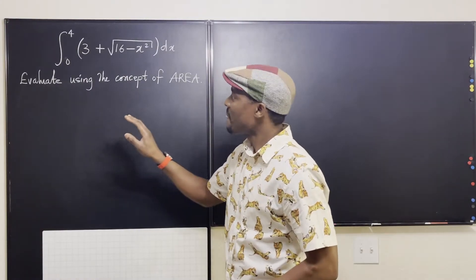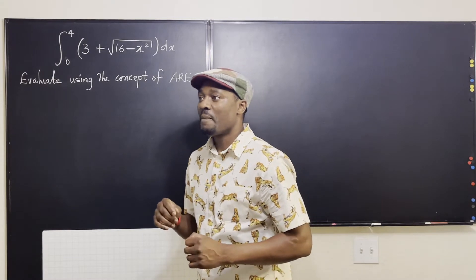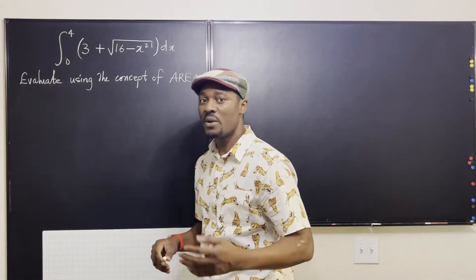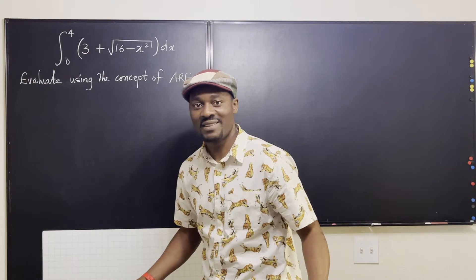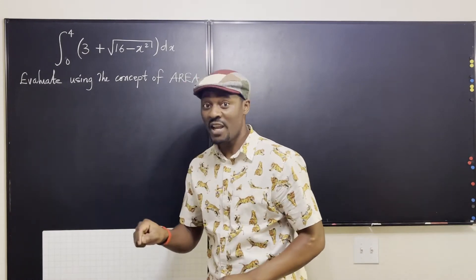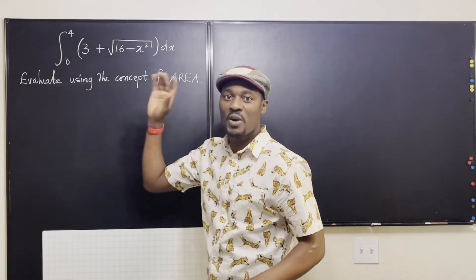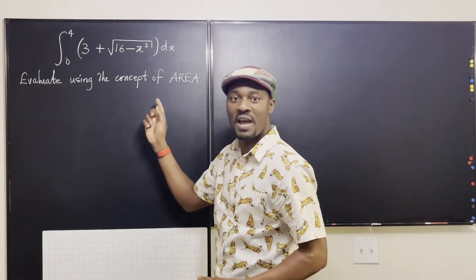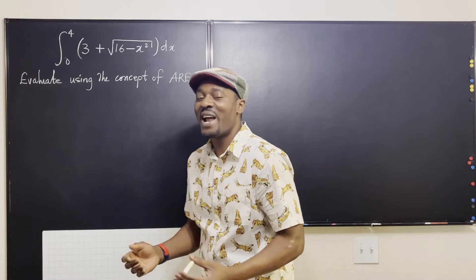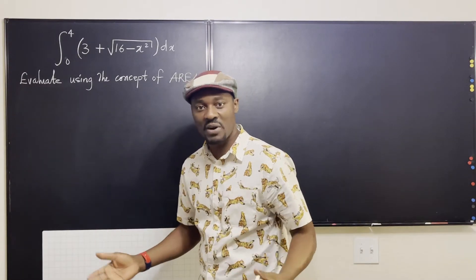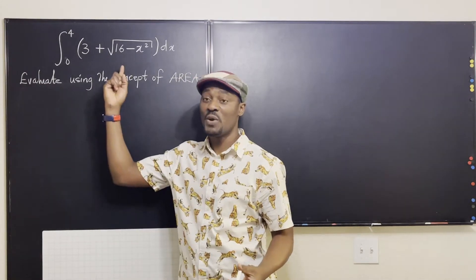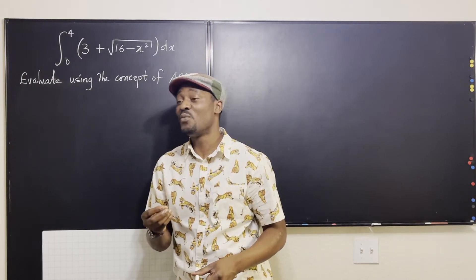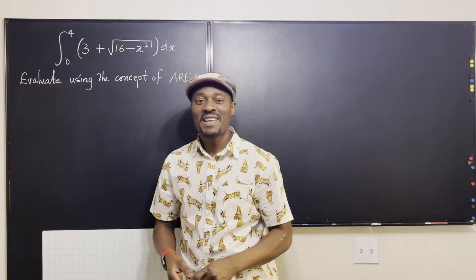This is one problem that often appears in tests, especially in Calc 1. The instructor usually puts a question like this to see if somebody was listening or somebody knows what they're doing. If you don't know what you're doing and you're cheating, you'll plug this into whatever application you're using and get an answer — but that answer does not use the concept of area. That's not how these applications are programmed, and then you can't explain what you did. That's how you get caught.